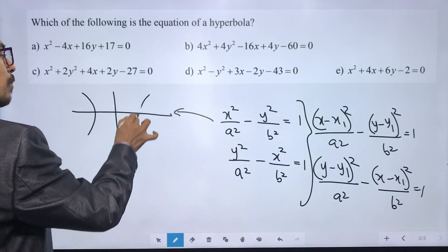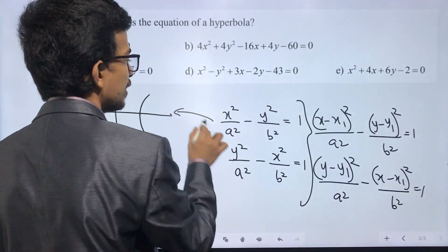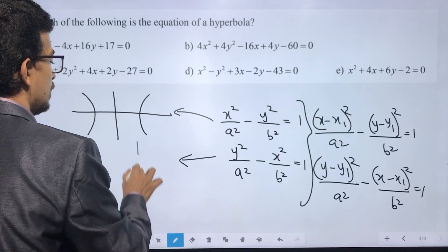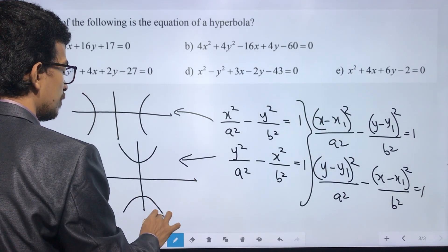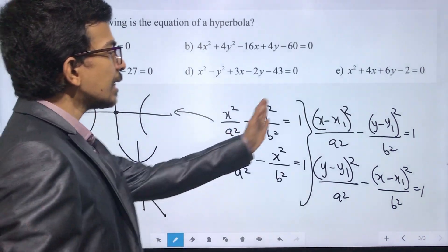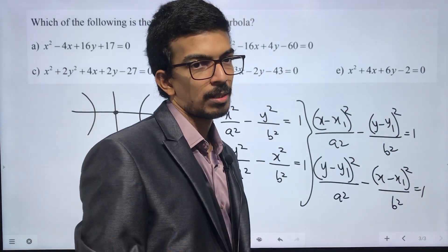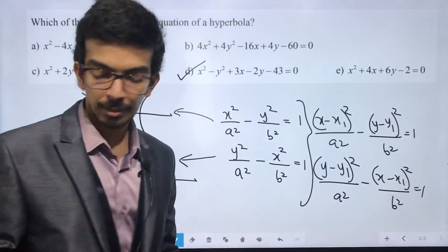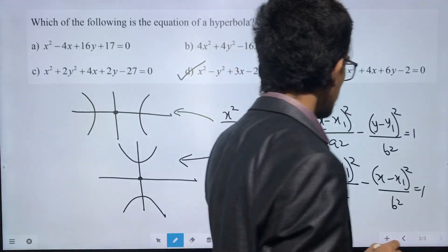Alternatively, (y minus y1) whole square divided by a squared, minus (x minus x1) whole square divided by b squared, equals 1. We identify which answer option matches the hyperbola form. The answer is option D.